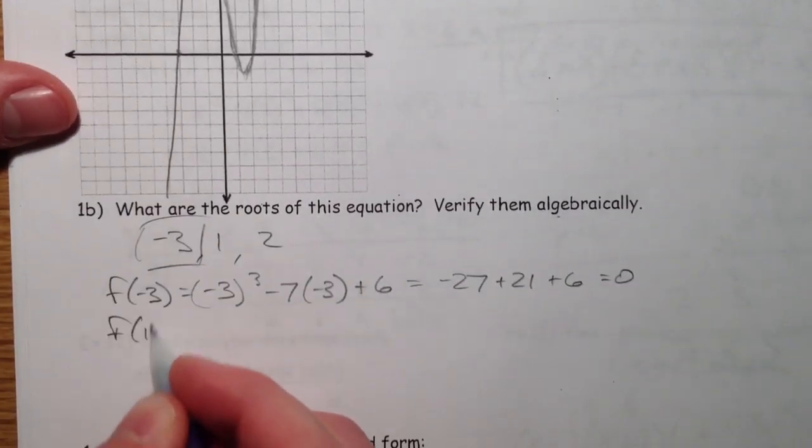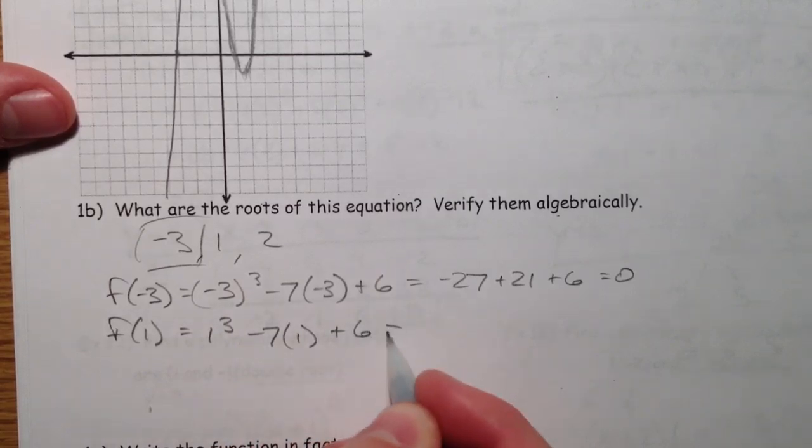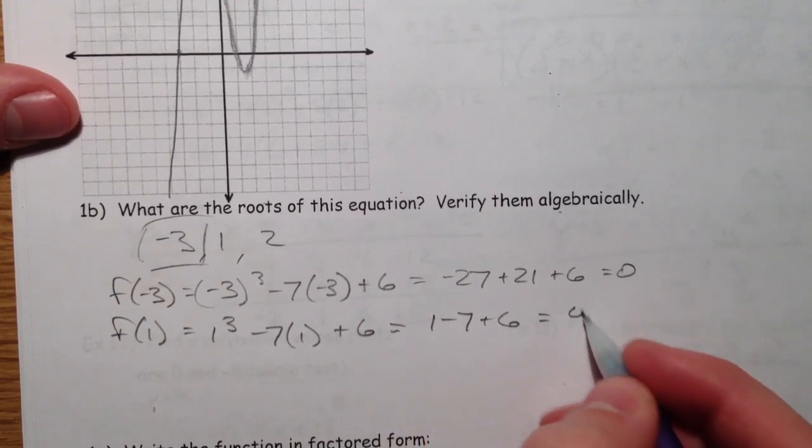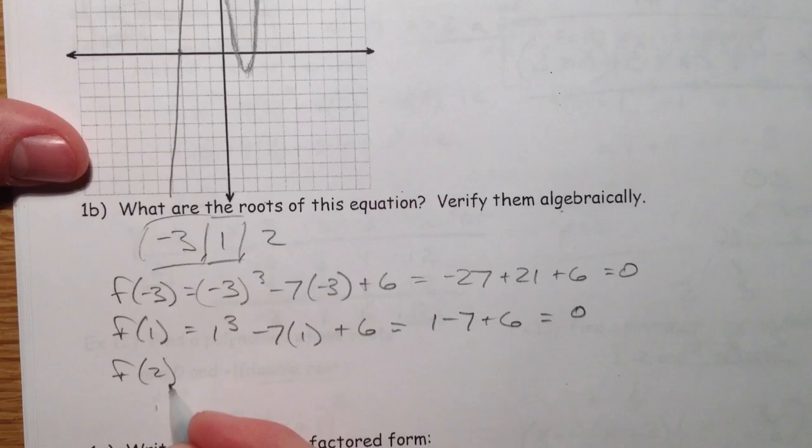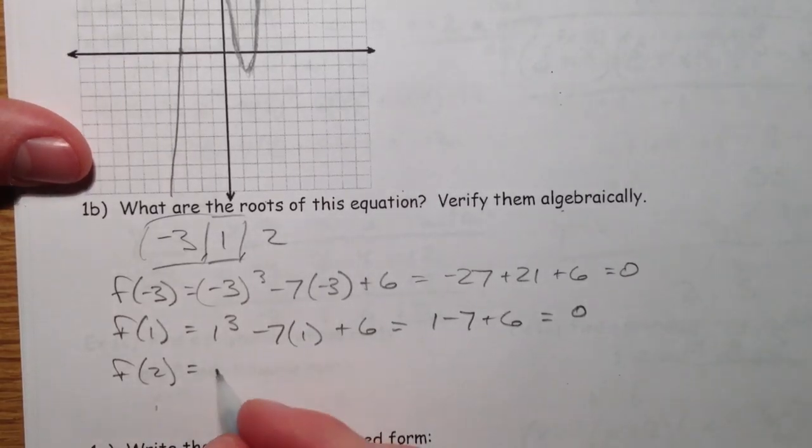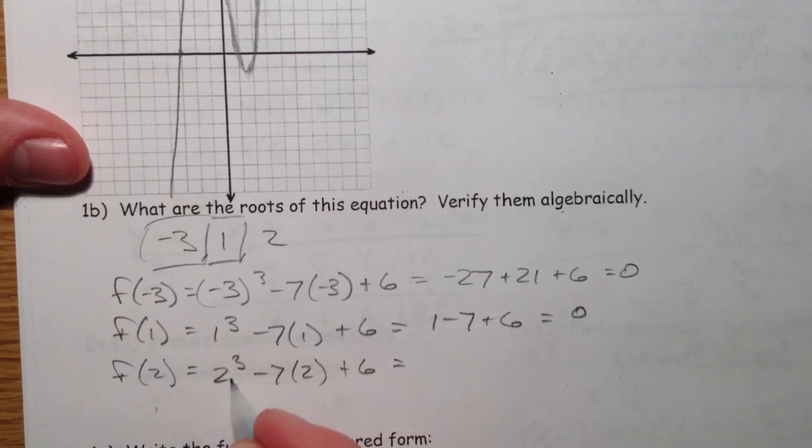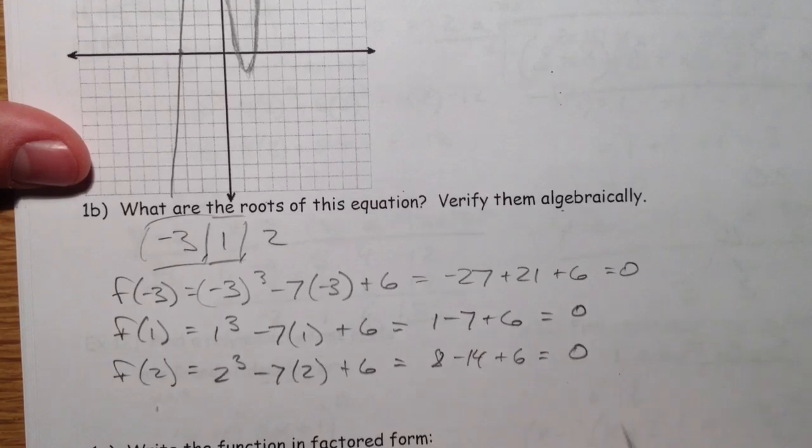f of 1, 1 cubed minus 7 times 1 plus 6. 1 minus 7 plus 6, negative 6 plus 6 is 0. Verified. f of 2, 2 cubed minus 7 times 2 plus 6. You guys get the idea. 8 minus 14 plus 6 is 0.